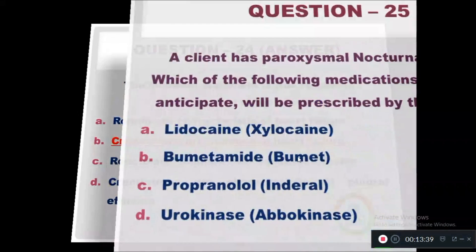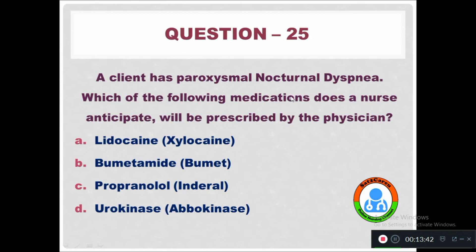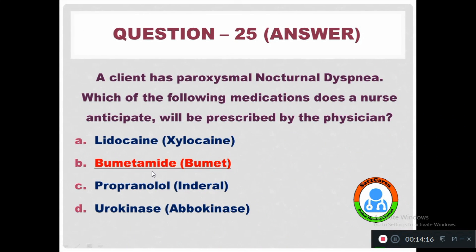Question 25: A client has paroxysmal nocturnal dyspnea. Which of the following medications does a nurse anticipate will be prescribed by the physician? Option A: Lidocaine. Option B: Bumetanide (Bumet). Option C: Propranolol (Inderal). Option D: Urokinase (Abbokinase). The right answer is bumetanide (Bumet), which can be prescribed by the physician for a patient with paroxysmal nocturnal dyspnea.